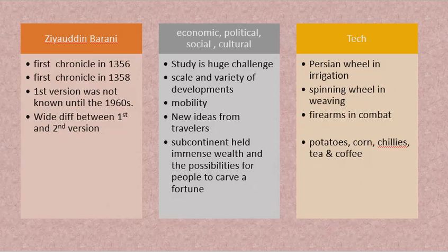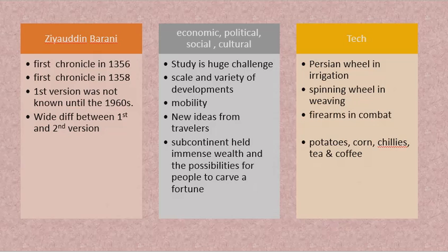Earlier, people were not coming to the Indian subcontinent or going back so quickly. Now, because of developments in travel and transportation, people were coming and going. Every time people went back, they told stories about India — the wealth, spices, silk, and other riches — and so new people came. When more people started coming from more different parts of the world, the Indian society and community also underwent a lot of changes. That is why the study of history for the period 700 to 1750 is difficult.